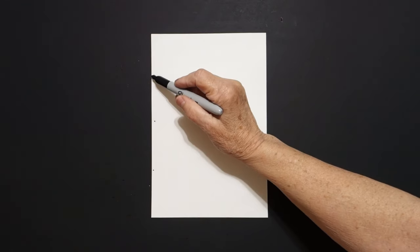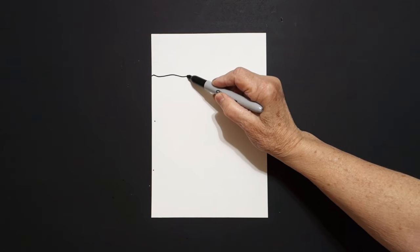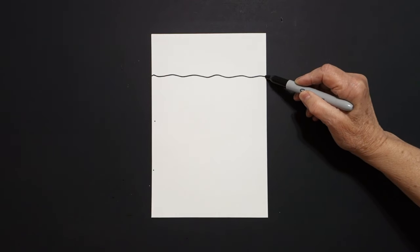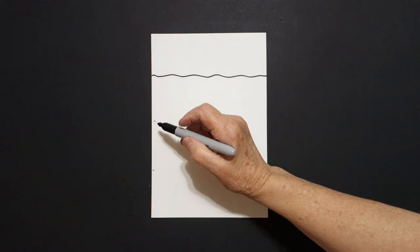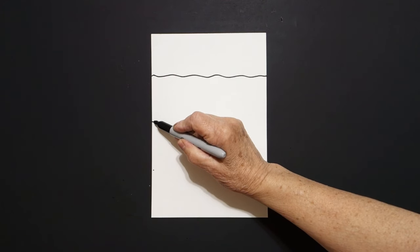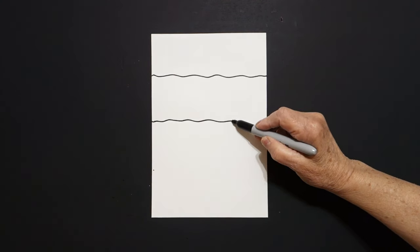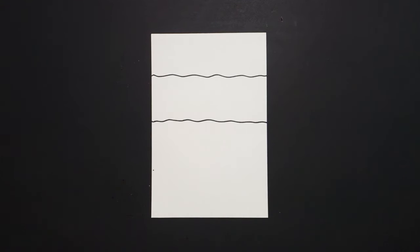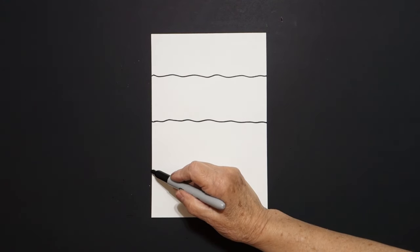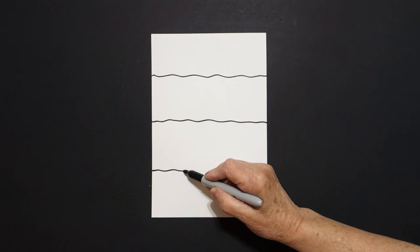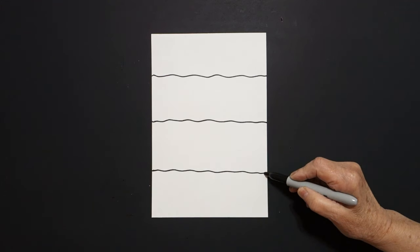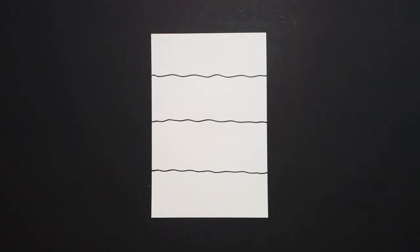Come back to the first. We're just going to draw a slightly wavy line across, left to right. Come down, slightly wavy line across, left to right. Come down to the next one, slightly wavy line, left to right.